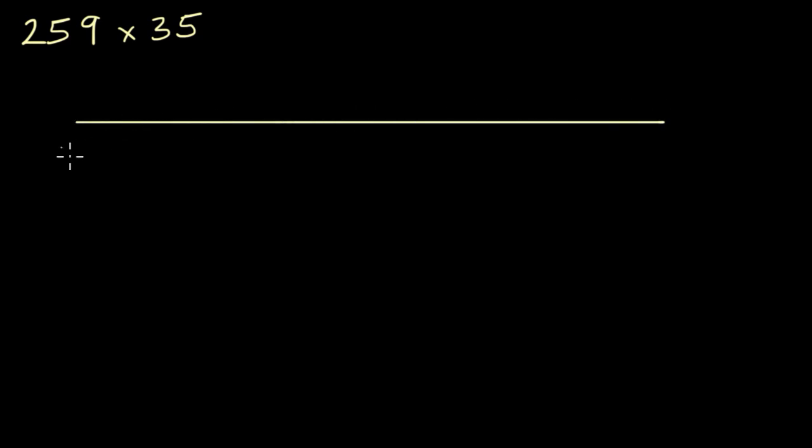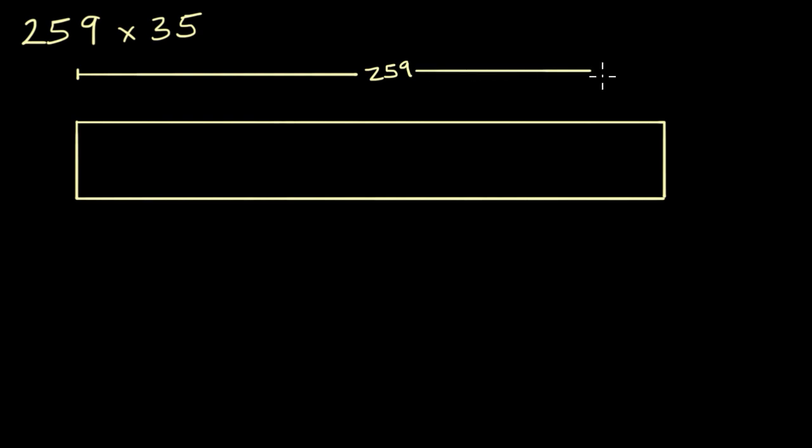I'll make it a really wide rectangle. So that's the width of our rectangle, and then that's the height of our rectangle. Let me just draw the entire rectangle. And let's imagine that this width of this rectangle over here is 259 units, whatever those units might be. And then this height over here is 35 units.